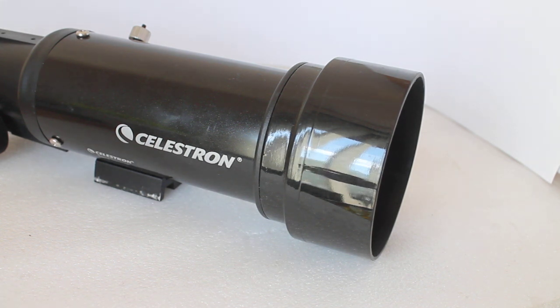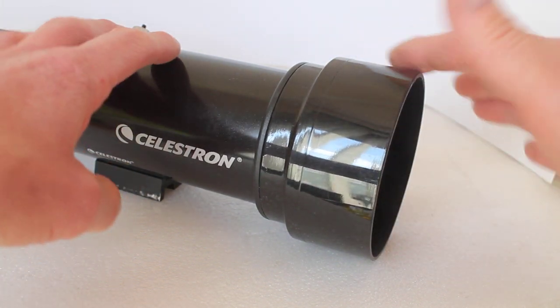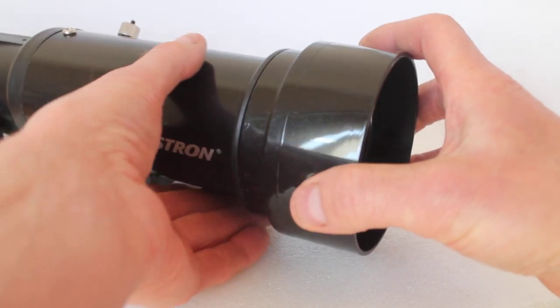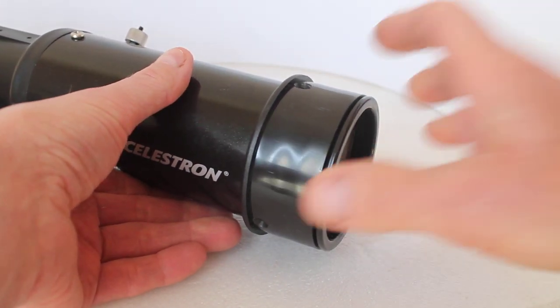So what I've done is I've just removed the lens cap, and this dew shield here simply pulls off. So that's easy.